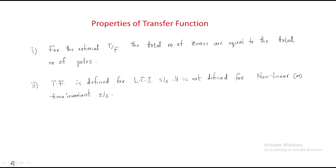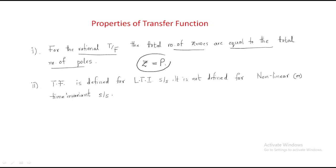Now we discuss the properties of the transfer function. First property: for a rational transfer function, the total number of zeros must equal the total number of poles. If the system doesn't have an equal number of zeros and poles, you need to make the combination equal by adding zeros or poles accordingly.